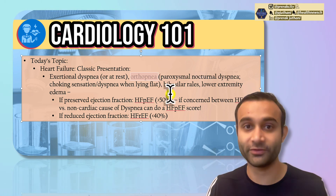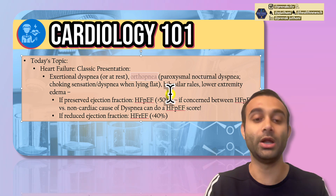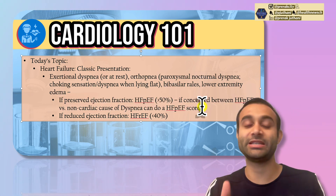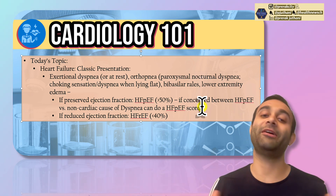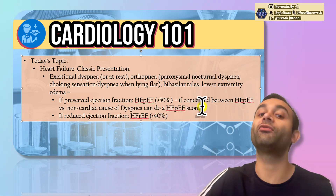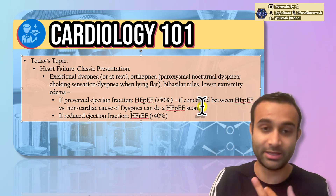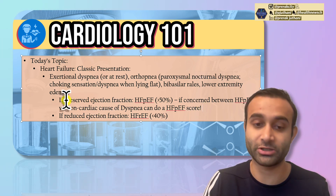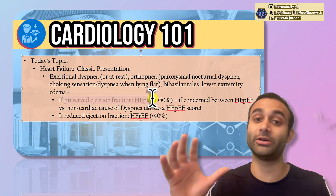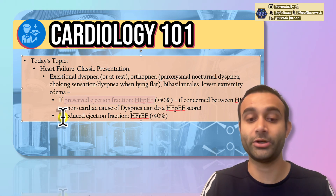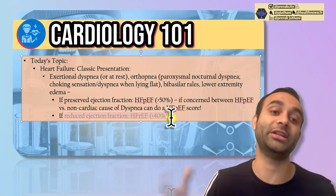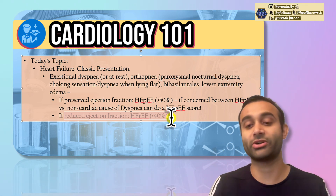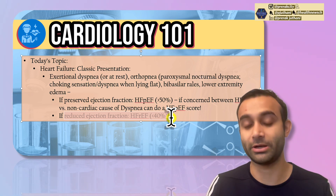The big ways we classify heart failure are based on ejection fraction. We look at someone's underlying heart using an echo to see how well their left ventricle is contracting. If that left ventricle is contracting well and they still have signs of heart failure — shortness of breath, fluid in the lungs, lower extremity edema — then they're diagnosed with heart failure with preserved ejection fraction. But if their ejection fraction is low, we call that heart failure with reduced ejection fraction. Reduced ejection fraction implies an EF less than 40%; preserved ejection fraction usually implies greater than 50%.